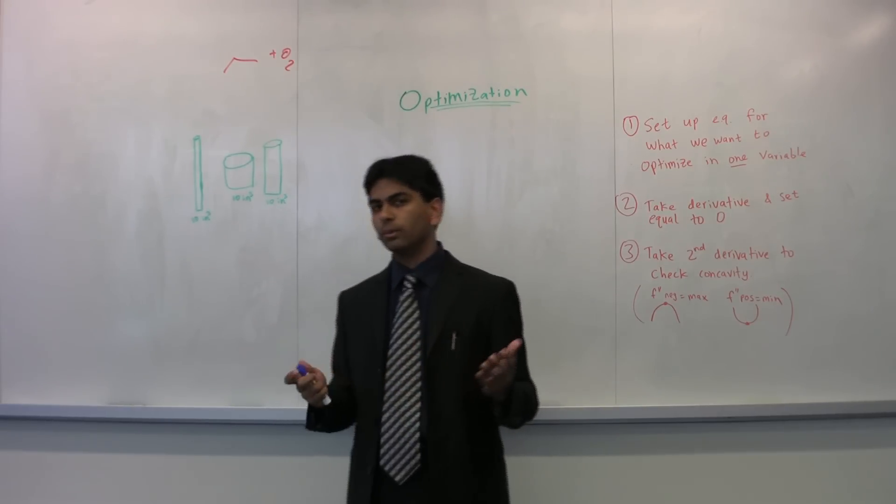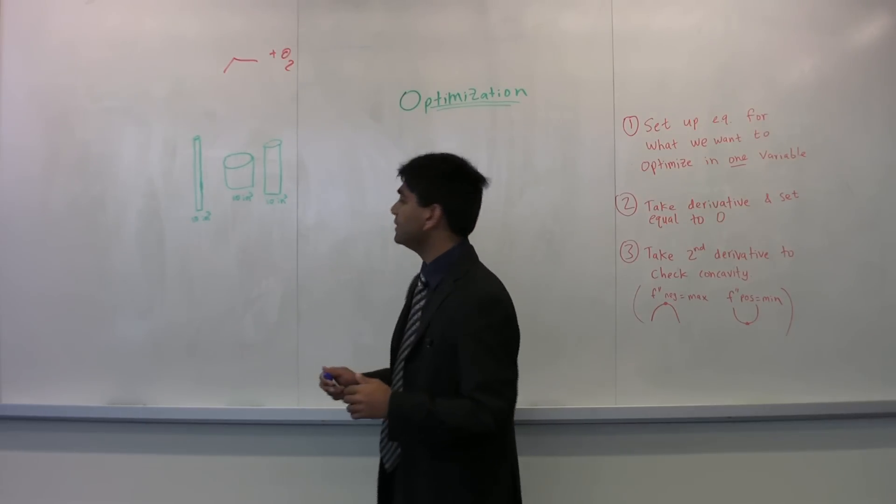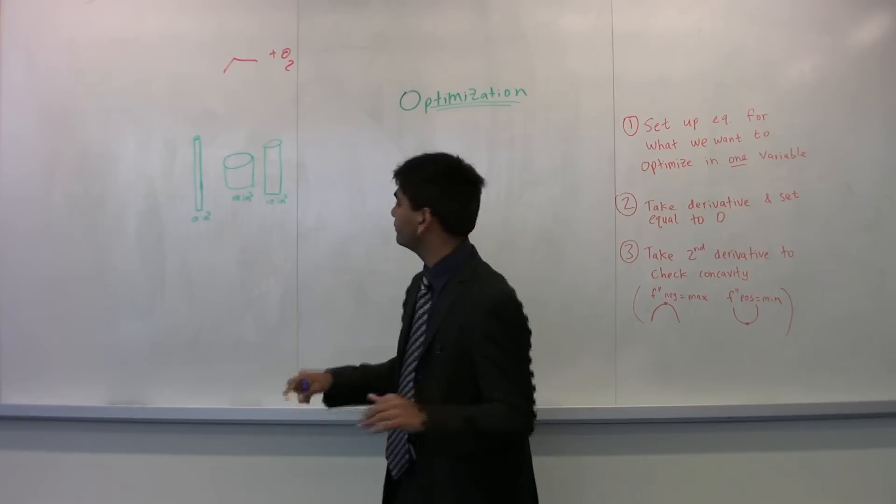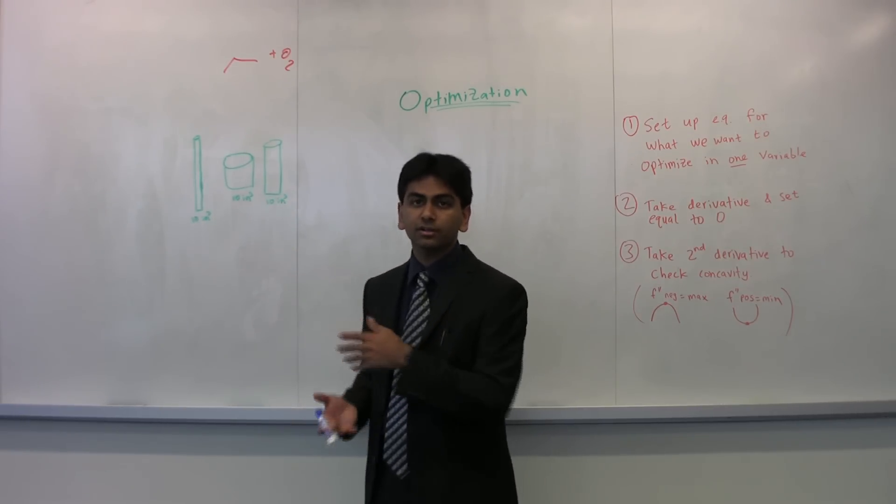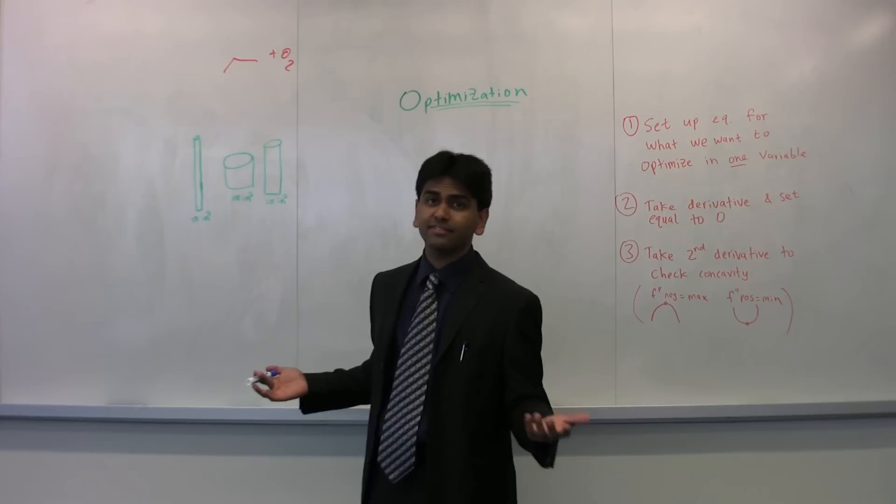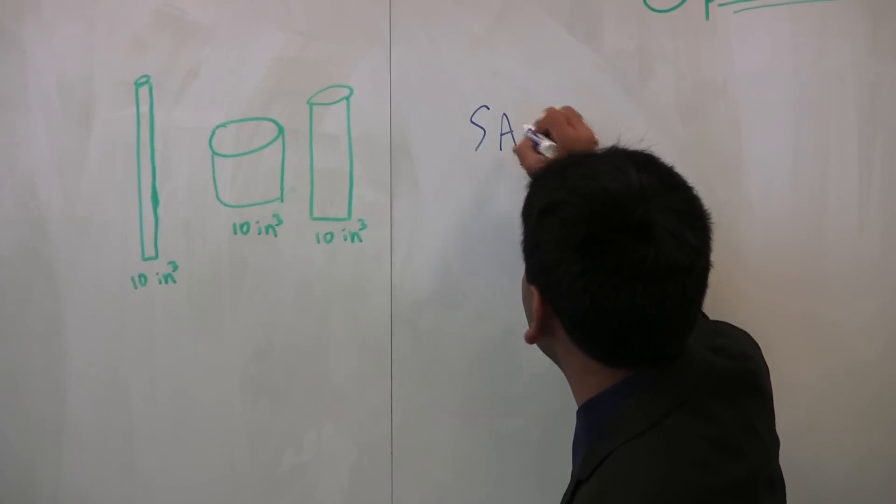So what do we want to minimize? Well, we want to minimize, in this case, the surface area of the cylinder. By minimizing the surface area of the cylinder, we have minimized our cost effectively. So, what is the formula for the surface area of a cylinder?